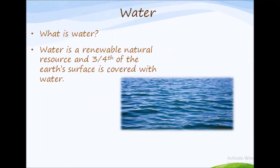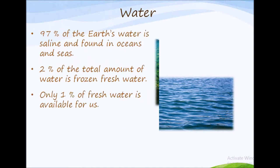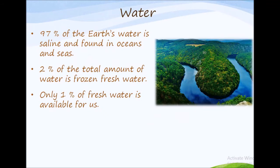What is water? Water is a renewable natural resource and three-fourths of the earth's surface is covered with water. However, 97% of the earth's water is saline and found in oceans and seas. Two percent of the total amount of water is frozen fresh water and exists in the form of polar ice caps and snow on high mountains. Hence, only one percent of fresh water is available for us, and this fresh water is the most precious substance on earth because we drink it.